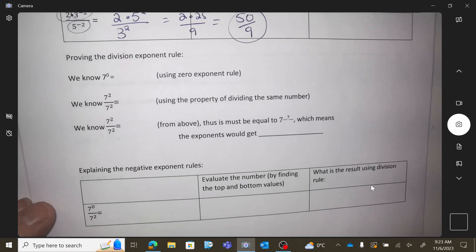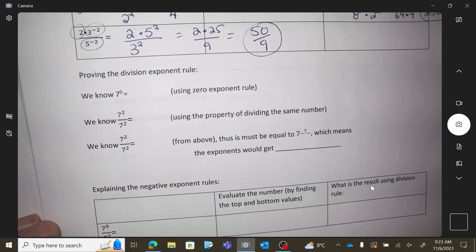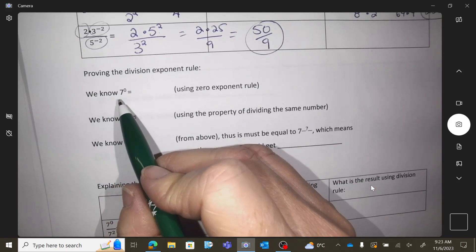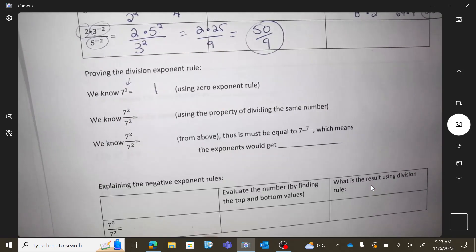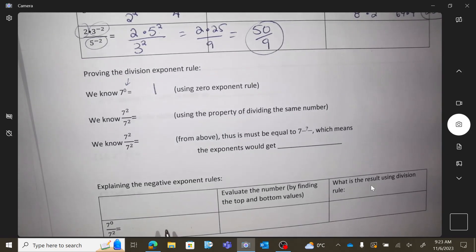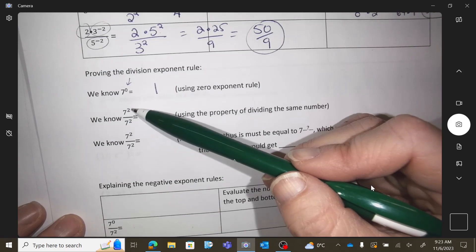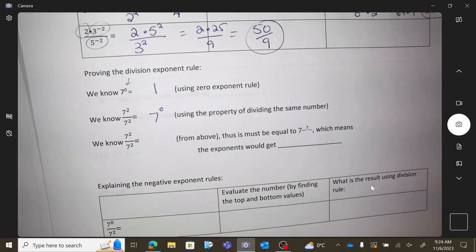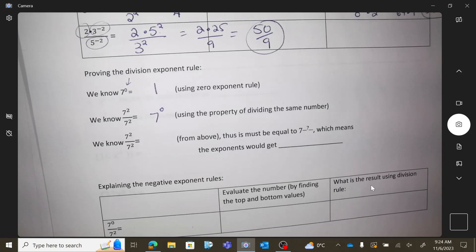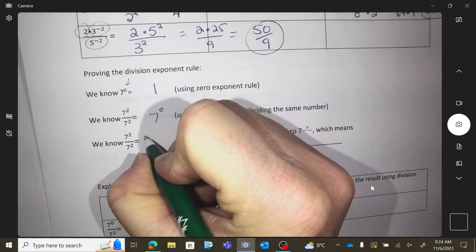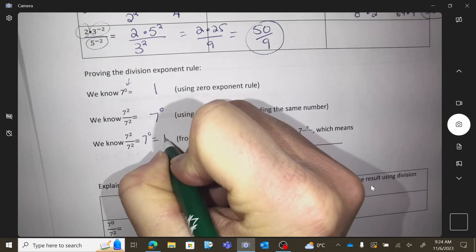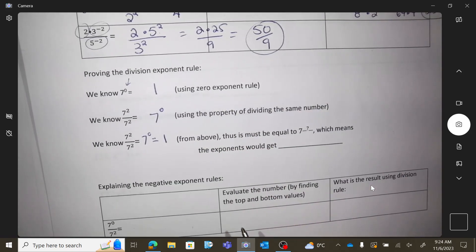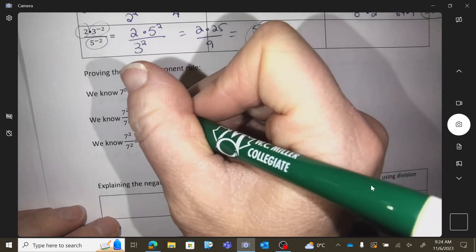Okay, we've actually kind of done something like this before. The zero rule, we knew that anything to the zero equals 1. If we do a division rule on this, the base is 7, and then you would subtract your exponents. So thus, I should be able to conclude that everything like that would equal 1.